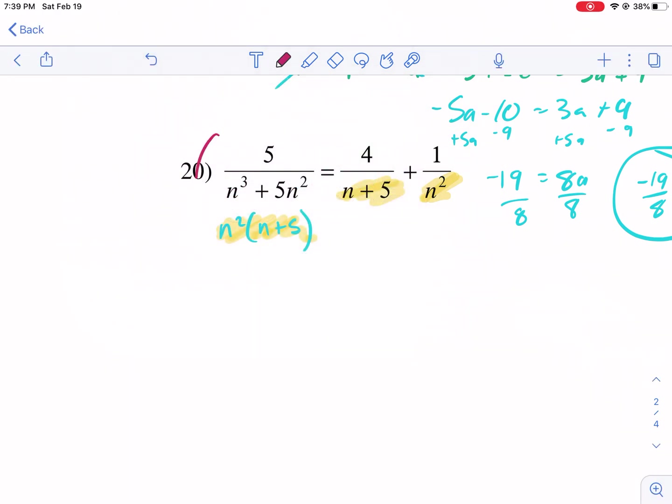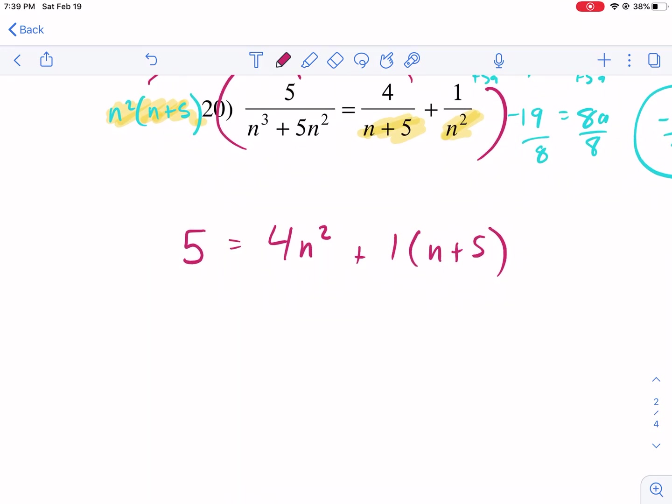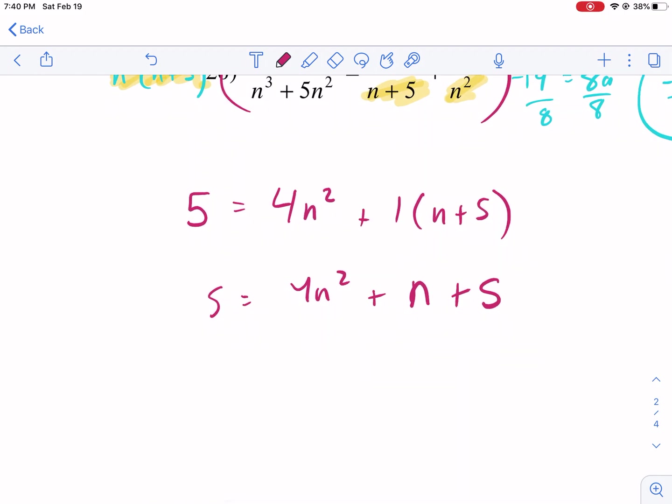Essentially, we are going to multiply both sides by n² times (n+5). Let's do it in pink. Multiply both sides and distribute to all three terms. We already know that this is equivalent. So it's just going to equal 5 on the left side, it cancels out completely. On the right side, we're going to have the (n+5) cancel out, so we're left with 4 times n². And then the n² cancels out, so we have 1 times (n+5). This one's actually fairly simple. Next we need to distribute. We have 5 equals 4n² + n + 5. Now I need to subtract 5 from both sides. I have 0 = 4n² + n.